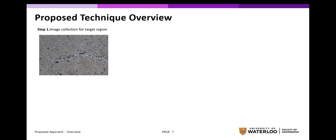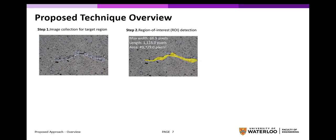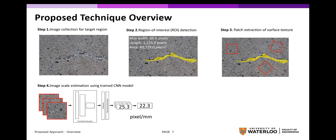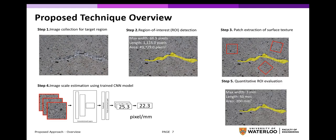Given that we have a trained image scale estimator, the process can be used as follows. Step 1, we collect images of the target region. Step 2, we run feature detection algorithms, or manually highlight the region of interest, and in this step we can also quantify the feature in terms of maximum width, length, and area. Step 3, we extract patches of the surface texture around the region of interest. Step 4, we feed the patches into the scale estimator to get estimations of scale given the texture patches and aggregate the estimations into one single scale. Step 5, we use that scale to quantify the pixel-based measurements into physical measurements.